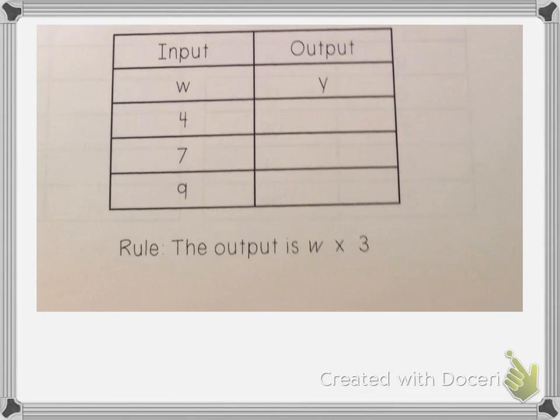Sometimes you're going to have a scenario where they give you the rule and you have to fill in the rest of the table. I think these are a little bit easier. This one, they tell you that the output is W times three. So that means I need to take the number in the W side and times three, and that will equal the output.